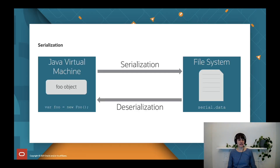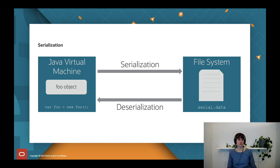You see a little diagram here — there's a JVM on the left-hand side with an example foo object, and on the right-hand side you have a file system, which could also be a JVM connected over the network. Serializing means extracting an object's state and translating it to a persistent format. Deserializing means reconstructing an object with equivalent state from that format. In this presentation, format refers to the serialized form, which is commonly a serial byte stream.